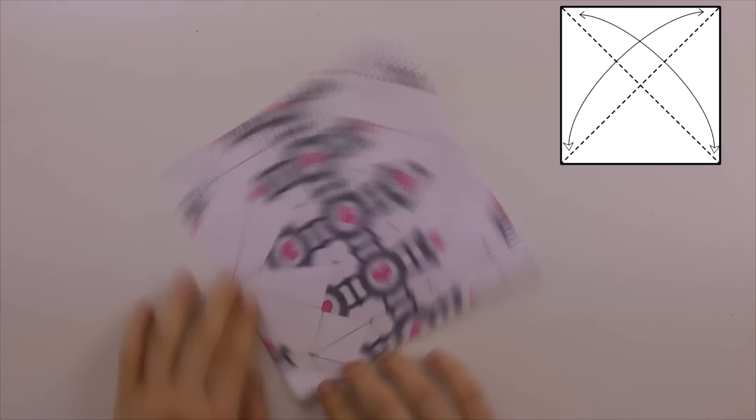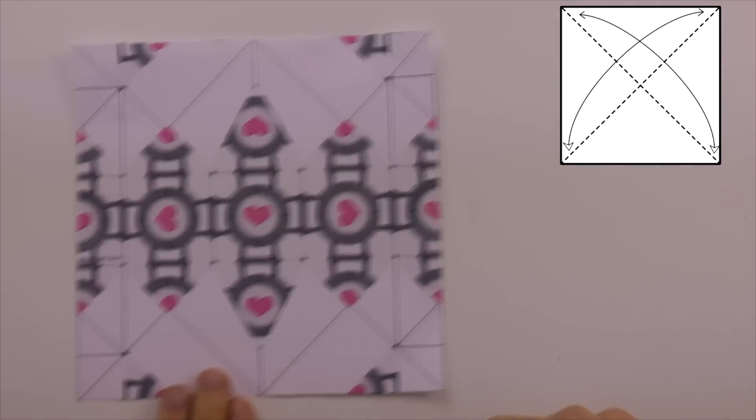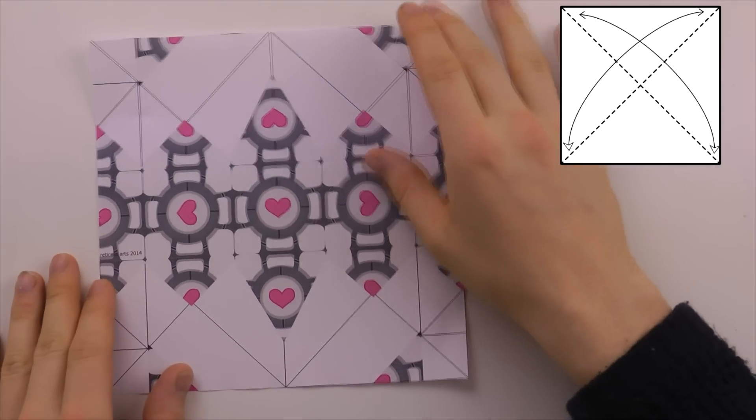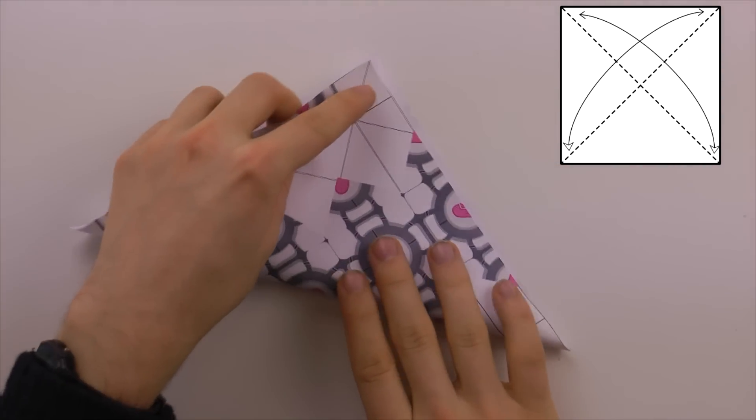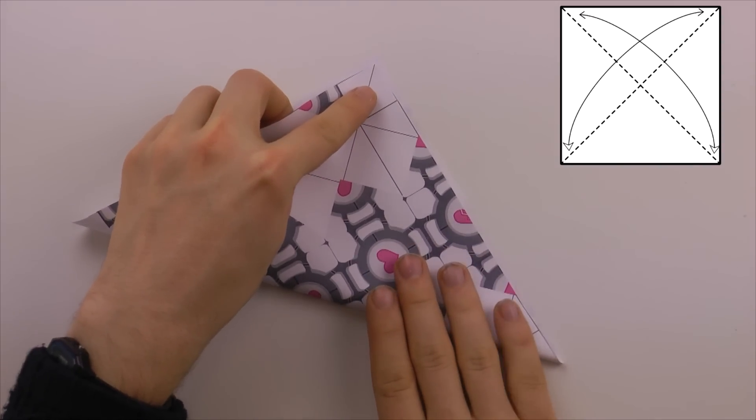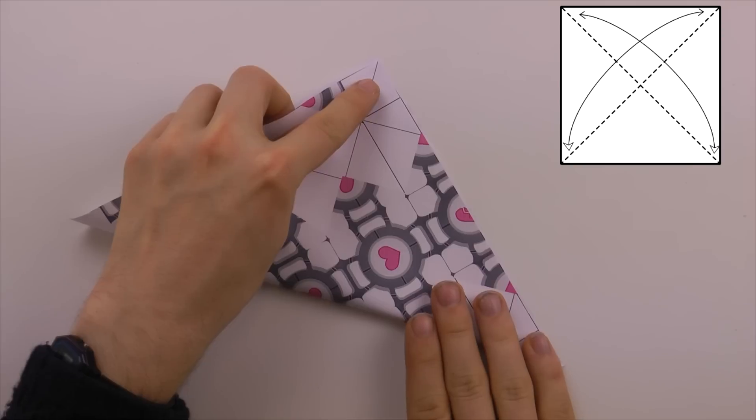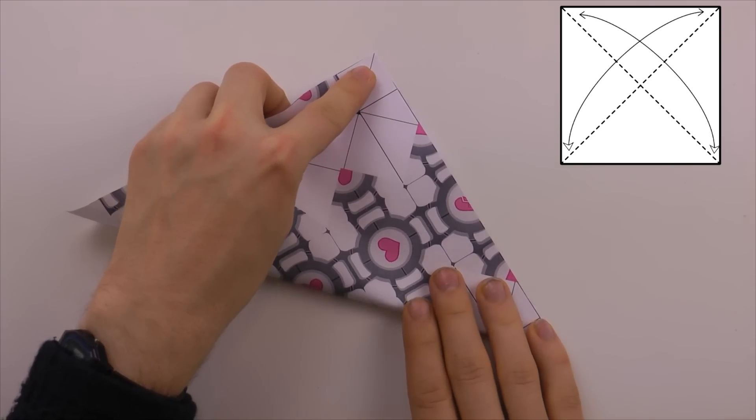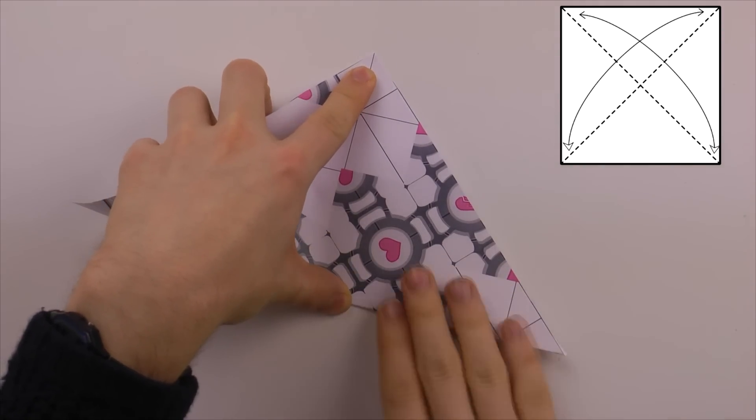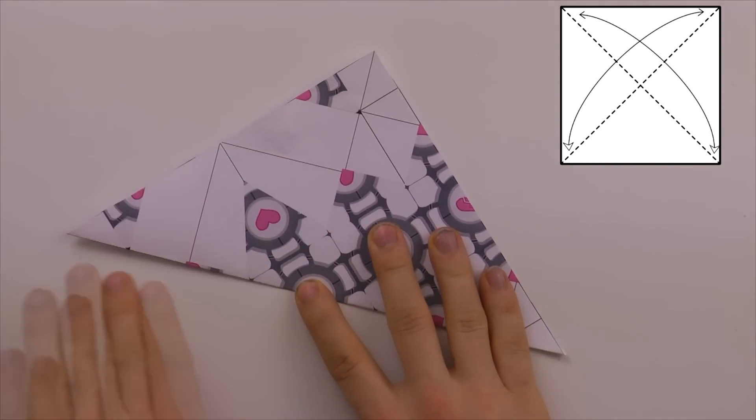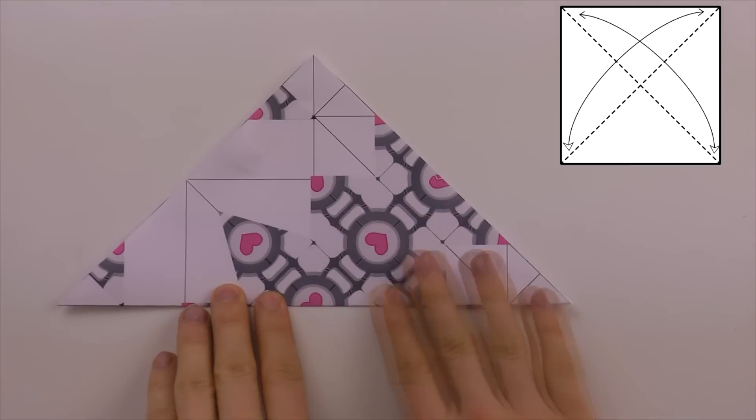We will begin with the white side up and folding it diagonally in both directions. Nice and neat, edge to edge and corner to corner. Make those first creases count because they are the most important.